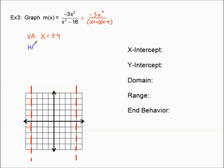Horizontal asymptote — again depends on degrees. The degree of the numerator is two; the degree of the denominator is also two. Same degrees means we take the leading coefficient ratio: negative three over one, so y equals negative three. I'll dash that in at negative three, starting to create our shell.